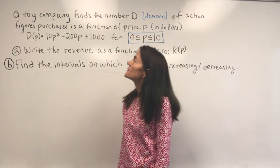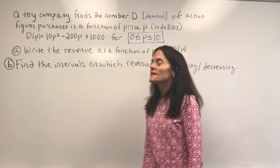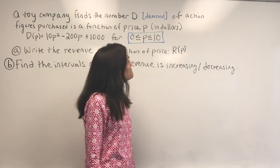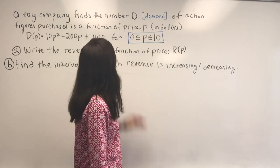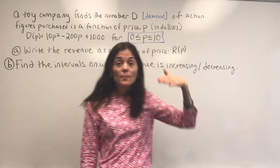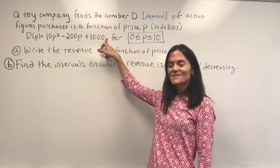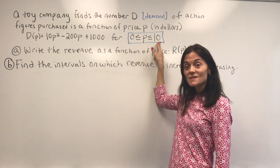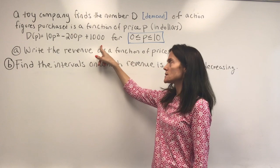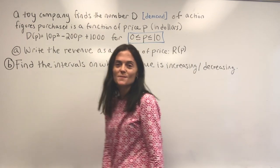I'd like to work this problem that involves demand and revenue, and in terms of calculus, it involves intervals of increasing and decreasing. We have a company that knows the demand — that's the number of action figures sold for a given price in dollars — is given by this function. This is boxed because we're considering the domain to not be the whole real line, but only this closed interval, so that it makes sense in terms of a price.